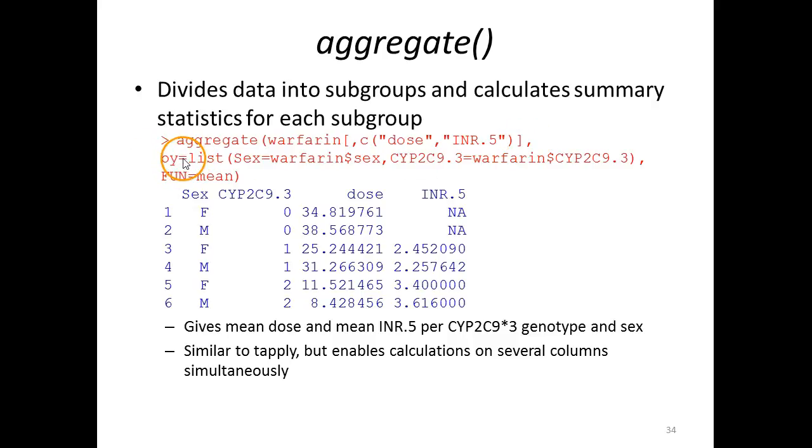The second argument is by, which indicates the grouping variables. As a list, we provide the two columns we're interested in. We also use the opportunity to give them names - we write sex equals warfarin dollar sex, that's not necessary but we do it, and we write CYP2C9 dot 3 equals the column containing these values.